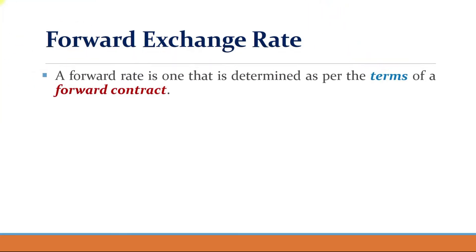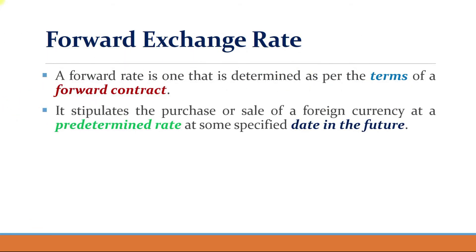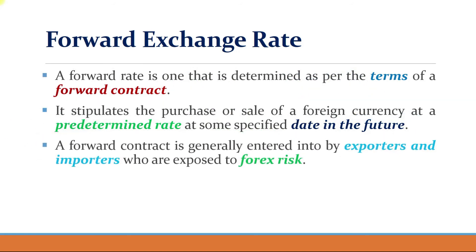The forward exchange rate is determined as per the terms of a forward contract. A forward contract is an agreement between two parties wherein both agree to buy or sell a particular asset — here, foreign currency — at a predetermined rate. They agree on a rate today, but the buying and selling happens after a certain period of time, maybe three, four, or six months. The rate fixed today for a future buy or sell is called the forward exchange rate.